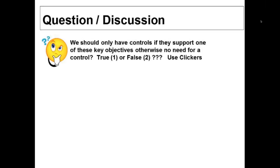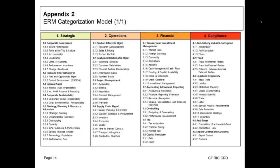We should only have controls that support one of these key objectives — true. What we did is say we're going to have controls not just over financial reporting. This technology does not just apply to financial reporting — it applies to any control environment. Everything we do is either strategic — things like corporate governance, internal audit, strategy and planning — or operational — customer relations, CRM, project management, supply chain, product life cycle management.